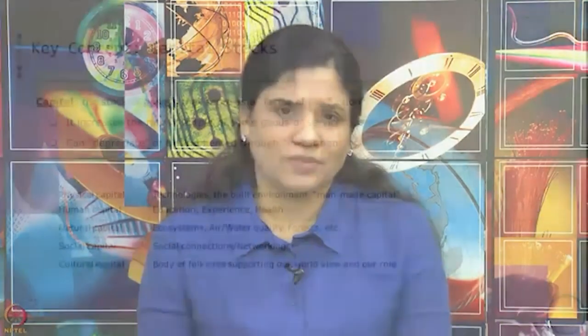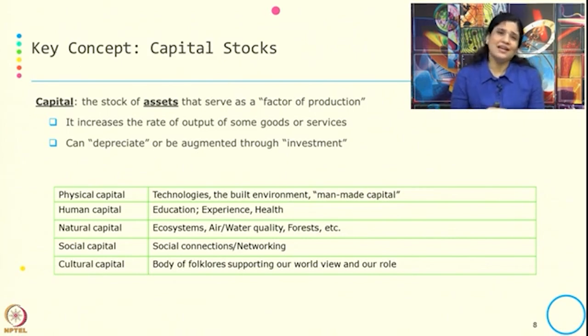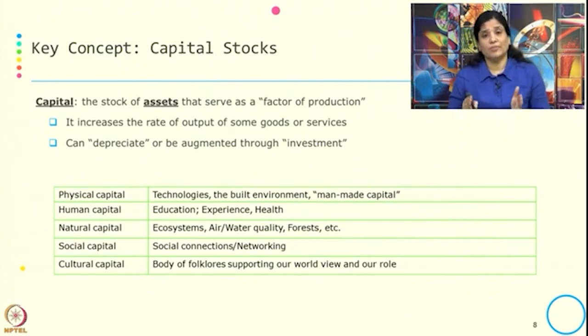Let us understand a bit more about the different types of capital mentioned in the definition. Capital is typically a kind of input — a factor of production. Capital is the stock of assets that serves as a factor of production. Its role is to increase the rate of output of goods and services when used as an input. Capital can depreciate over time and can be augmented through investment.